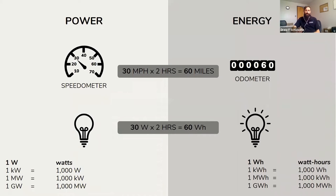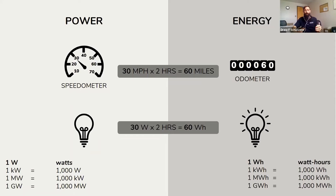Energy really does take into account the amount of time that you're using something. If you're driving in your car at 30 miles per hour, after two hours of driving that speed, you go 30 times 2 equals 60 miles. That analogy is very similar to how electricity works. With a 30-watt light bulb — watts being the power — if you use it for two hours, it's 30 times 2 equals 60 watt hours.